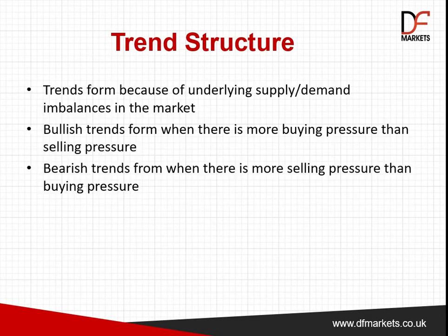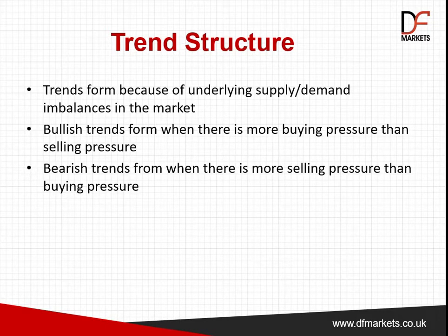The reason why trends form is simply because of an underlying supply-demand imbalance in the market. With bullish trends there is simply more buying pressure in the market than selling pressure, allowing price to continue to strengthen. The trend will continue until buying pressure fades and selling pressure builds, which brings the supply-demand balance back into equilibrium, causing a contraction of momentum, leading either to a change in trend or causing the market to settle into a range.